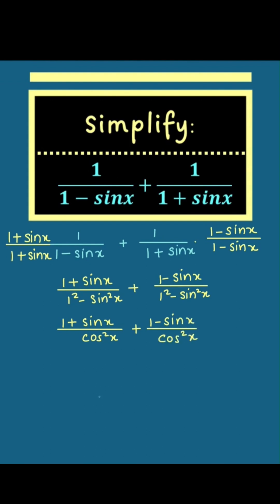The numerator simply reduces to 1 when the two terms are added together. So the sum is equal to 2 over cosine squared x, which is the same as 2 secant squared x.